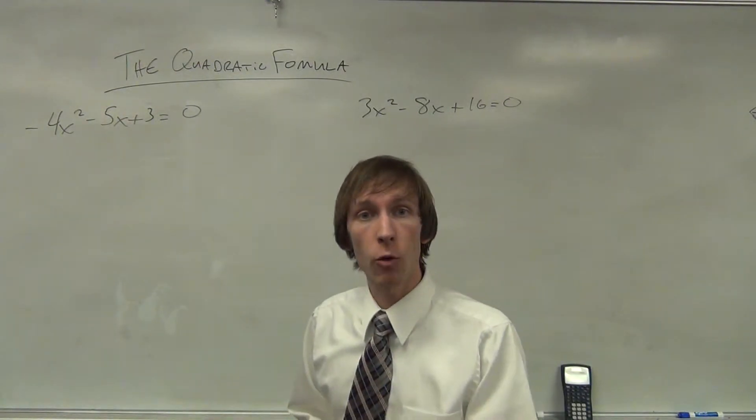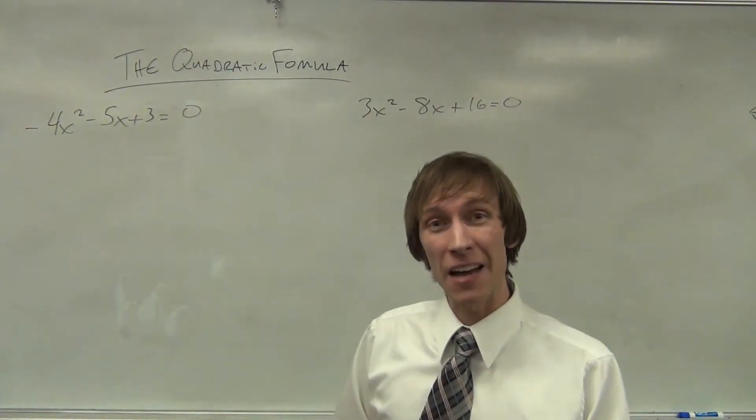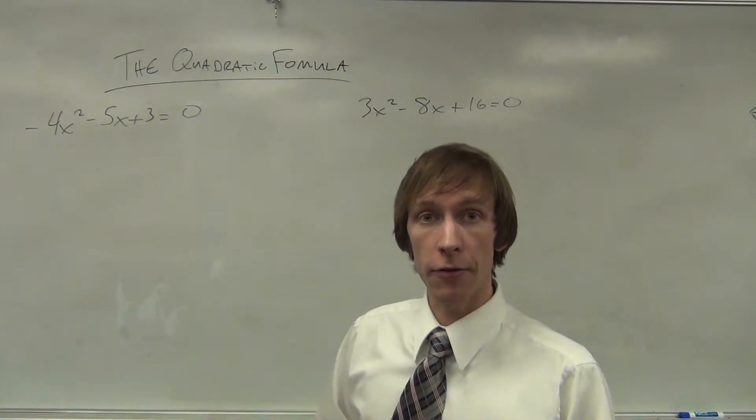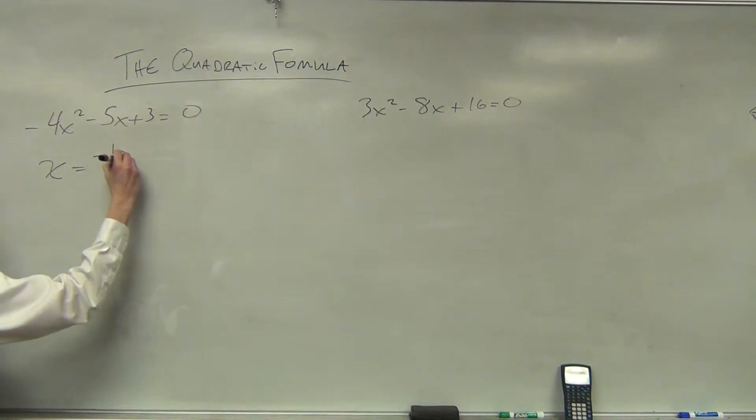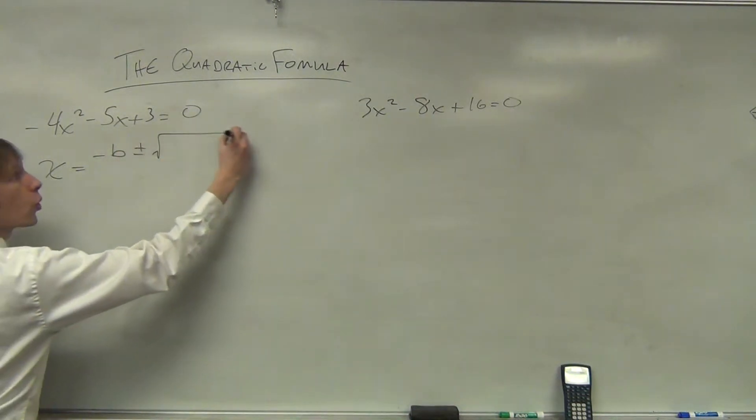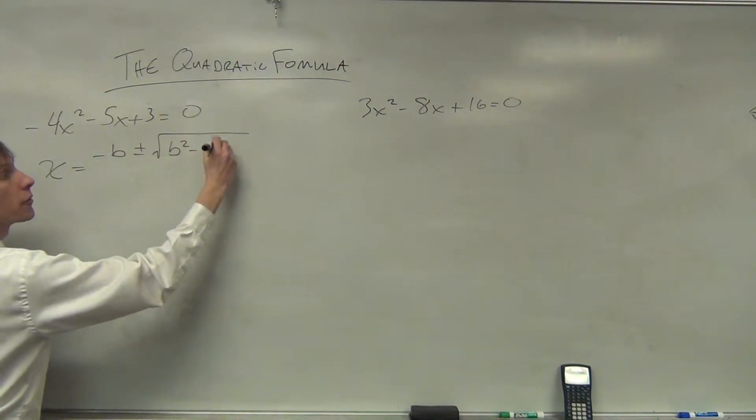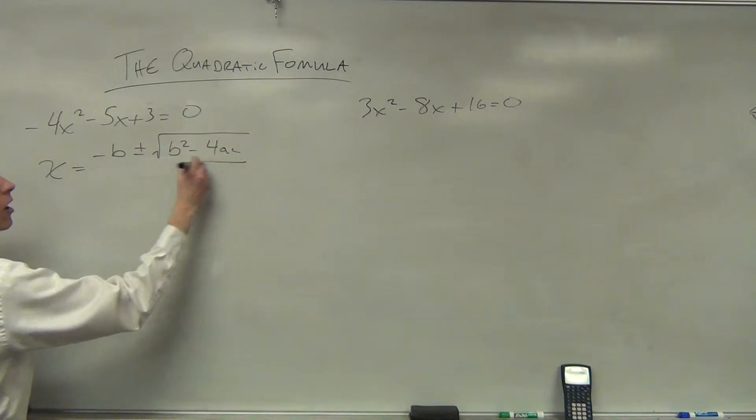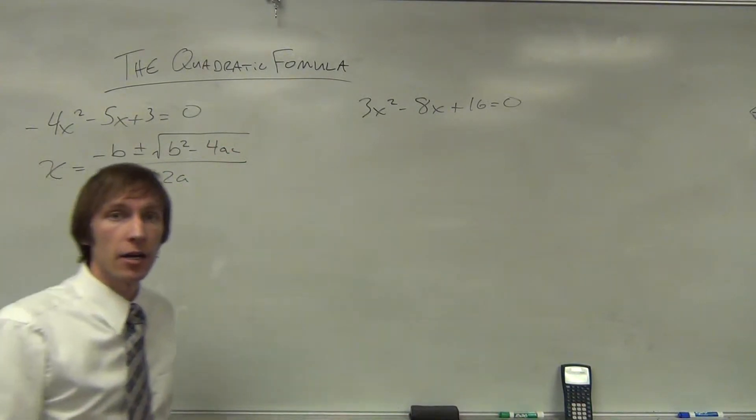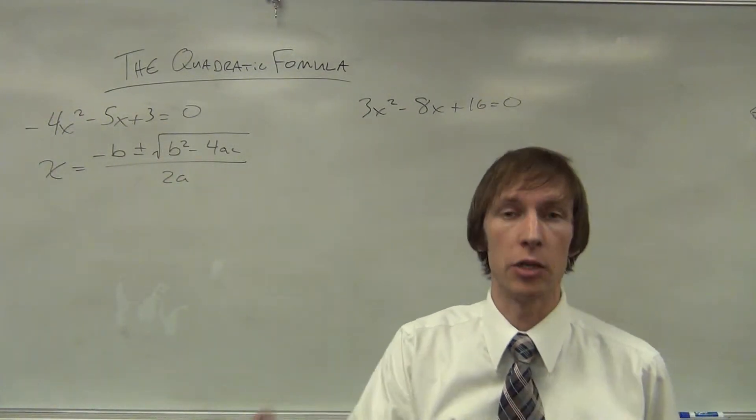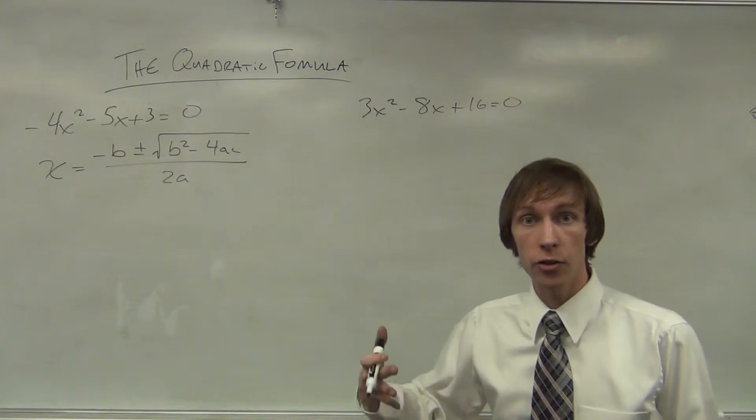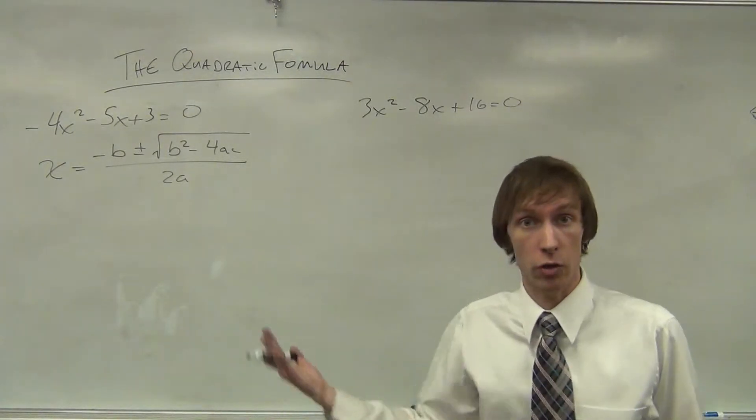So we have -4x² - 5x + 3 = 0. Knowing our formula, x equals the opposite of b plus or minus the square root of b² - 4ac all divided by 2 times a. We have to identify which number is a, which number is b, which number is c and substitute those into the correct place.